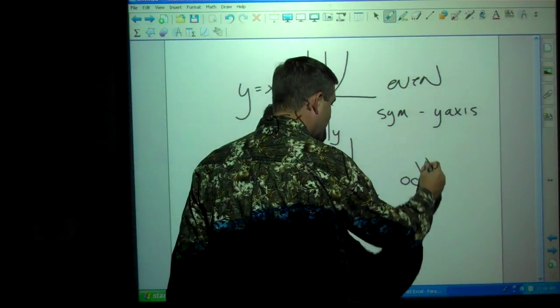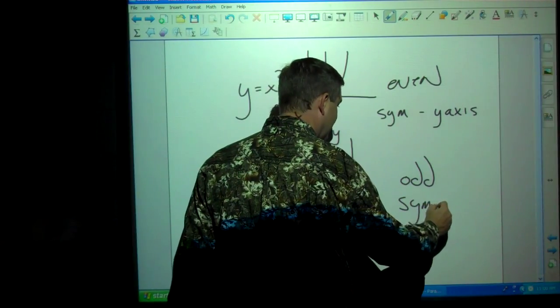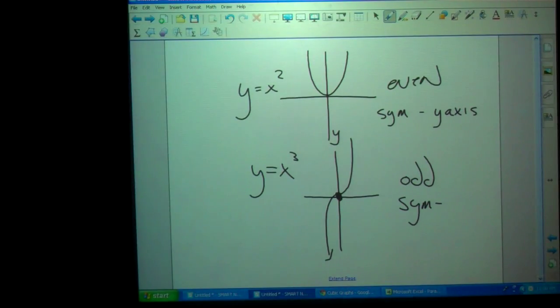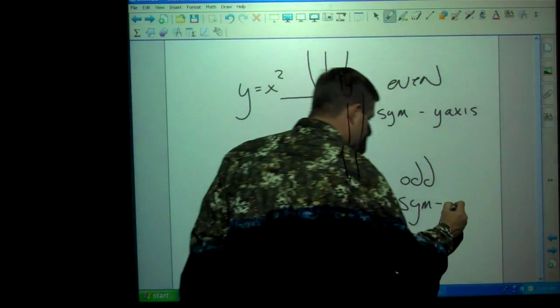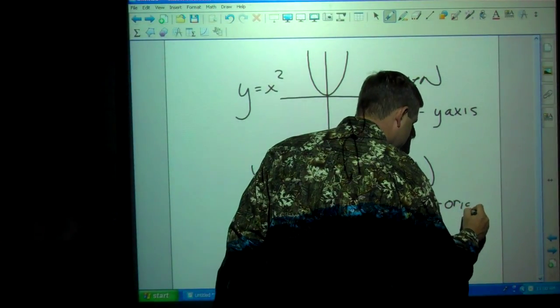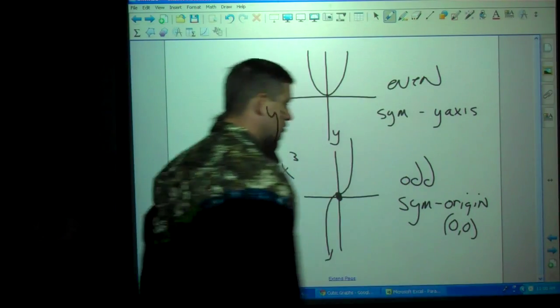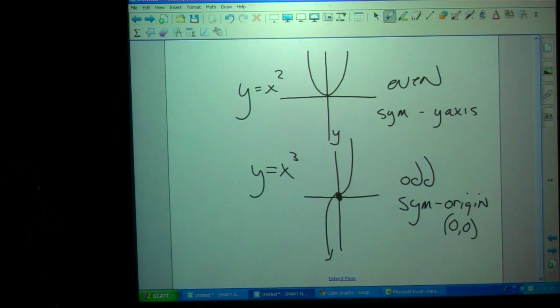This is odd. What do you think it is symmetrical about? It starts with an O. No, not the x-axis. The origin. Write that down. What is the origin? Zero, zero. Even and odd. Even functions are symmetrical about the y-axis. Odd functions are symmetrical about the origin.